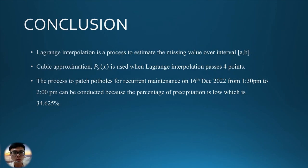Let's conclude this group assignment. Lagrange interpolation is the process to estimate the missing value over interval A to B. Cubic approximation is used when Lagrange interpolation passes 4 points.